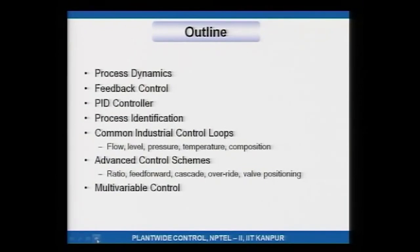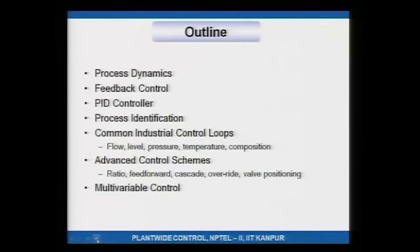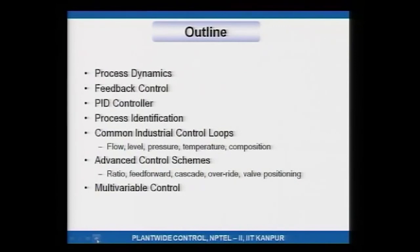The outline of this module is: first, we are going to look at what process dynamics is — what do you mean by process dynamics? Given that an output variable responds in a certain way to a change, how do you ensure the output variable is kept where you want it? That is accomplished typically using feedback control. In order to do feedback control there are various controller algorithms; the most popular in industry is the PID controller. We are going to talk in detail about the PID controller and how you tune them. The PID controller requires information gathered through process identification, so we will cover the most basic process identification techniques popularly used in industry.